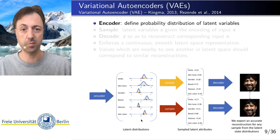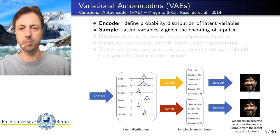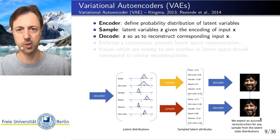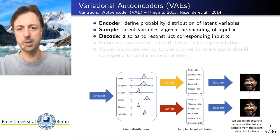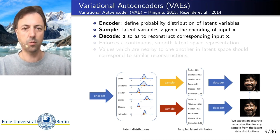Our encoder is a deterministic neural network. We take the input and map it to a probability distribution — instead of encoding a latent space vector, we encode the moments of a distribution in latent space, such as the means and variances of Gaussians. We then sample from this probability distribution, so if we repeat this twice we get different latent space vectors. Then we decode these latent space vectors to representations of X, such as images.